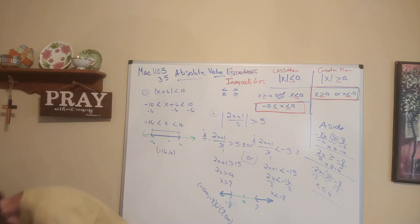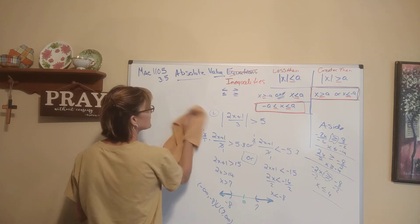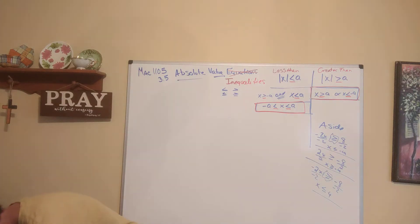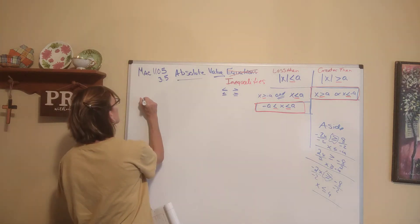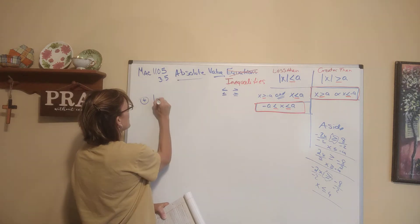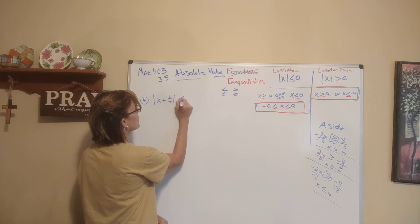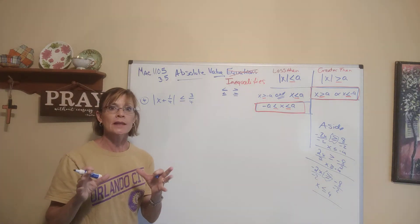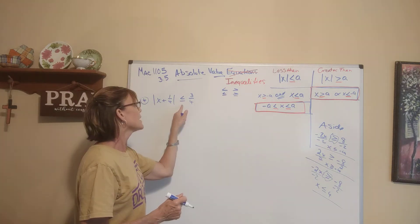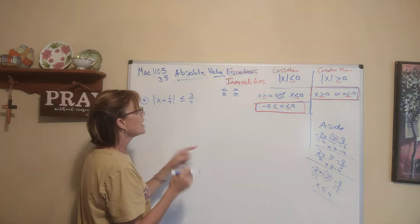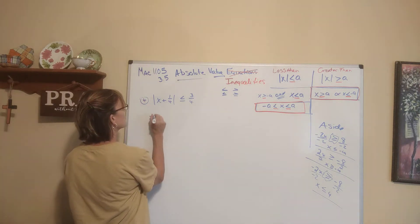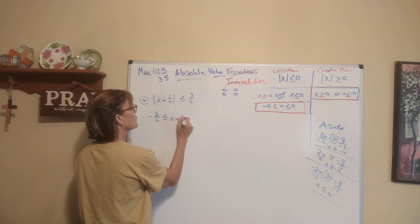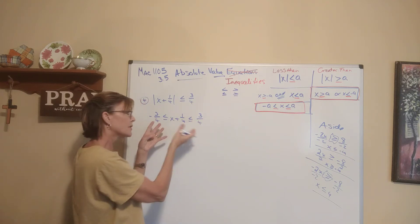Here's another example. The absolute value of x plus 1 fourth is less than or equal to 3 fourths. The absolute value is isolated, so we can apply the rule. It's less than or equal to, so we go to the less than side. We set up: negative 3 fourths is less than or equal to x plus 1 fourth is less than or equal to 3 fourths.